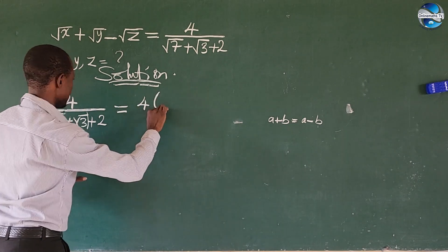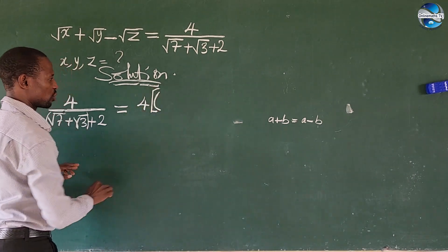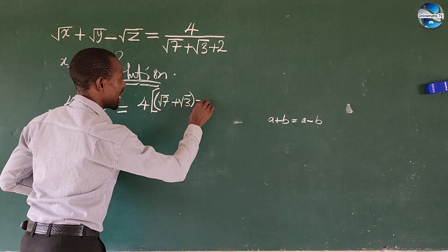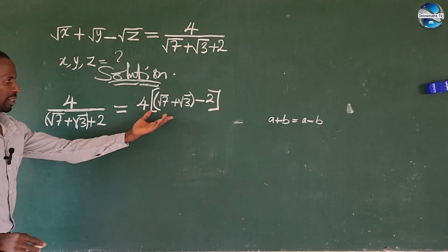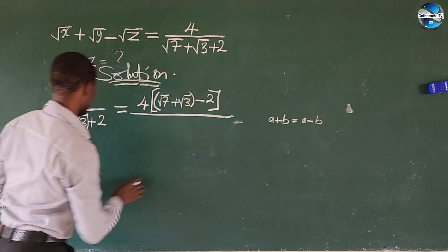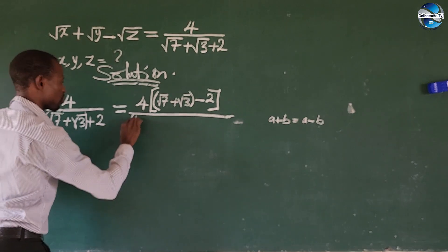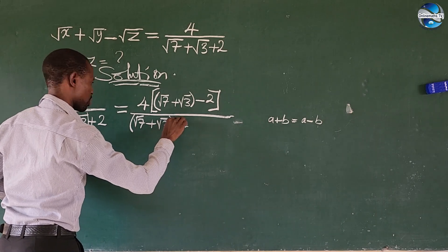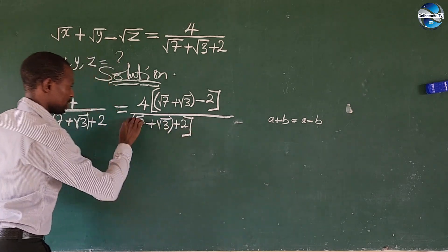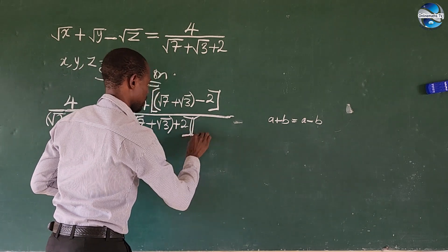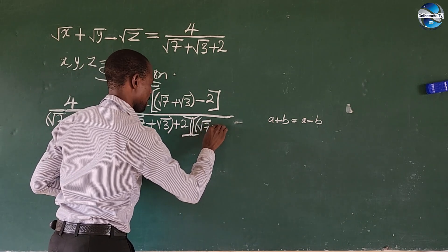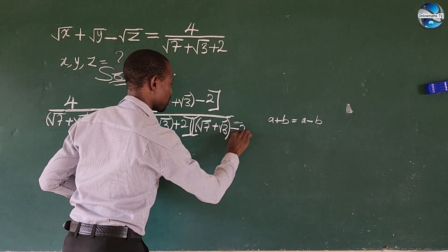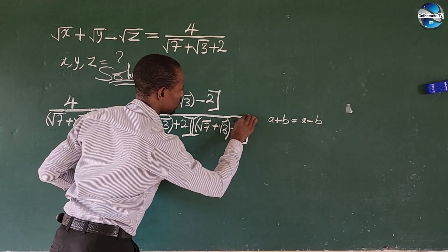Let's rationalize this. So this gives us 4 into the square bracket, root 7 plus root 3, close bracket, minus 2 — that's the numerator. For the denominator we do the same: we have your square root of 7 plus the square root of 3, close bracket, plus 2, multiplied by the square bracket of square root of 7 plus root 3, close bracket, minus 2.